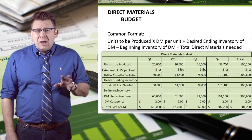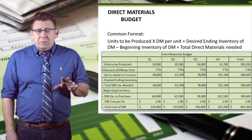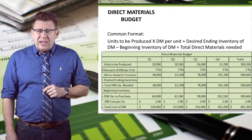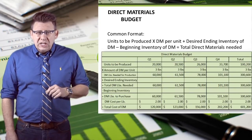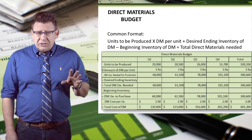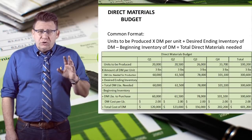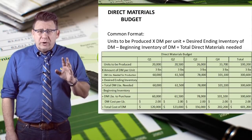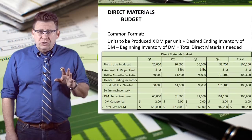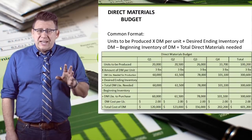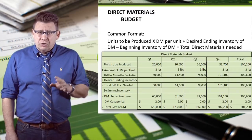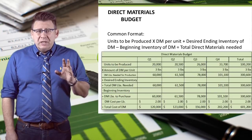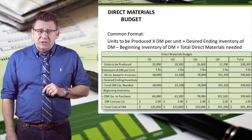A more common format would be to factor beginning and ending inventory into the calculation. So direct materials needed is units to be produced times direct materials used per unit, plus desired ending inventory of direct materials, minus beginning inventory of direct materials.